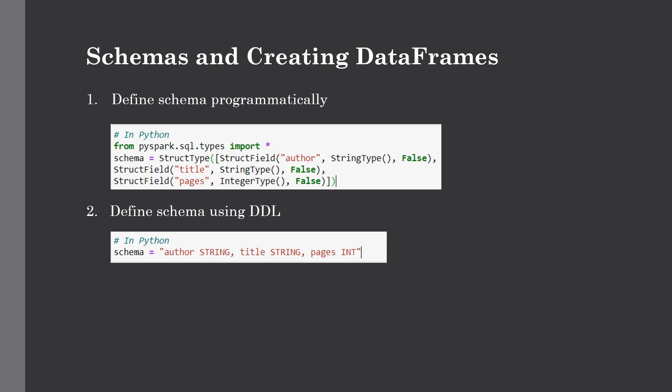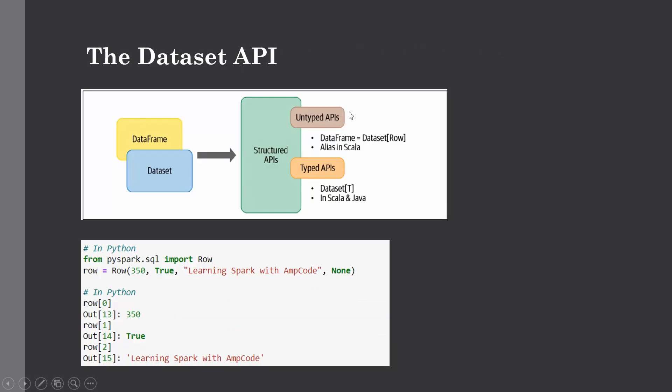The second way to define a schema is using Data Definition Language, also known as DDL. This is a simpler approach — you just provide the column name followed by the data type, comma-separated, as a string. This is very similar to creating a table in RDBMS. You can choose whichever approach you prefer; there are not many functional differences between the two.